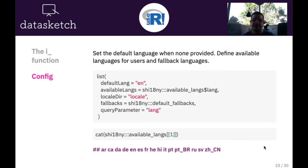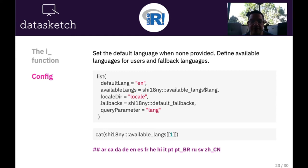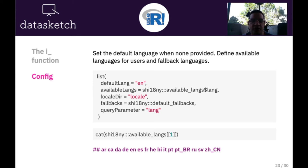Now let's look at the configuration. We saw already the default language and the available languages we want in the app. We can also define a locale directory, which is where we store our custom keyword translations. Then we can define fallbacks — if a translation is not found, where should it look? For instance, if we don't have a translation for a word in Portuguese, we could make it fall back to Spanish. And there's a query parameter for setting the language through the URL.